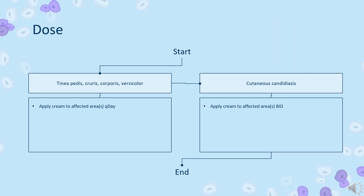Dose — Tinea fungal infections and cutaneous candidiasis: Indicated for topical application in the treatment of tinea pedis, tinea cruris, and tinea corporis caused by Trichophyton rubrum, Trichophyton mentagrophytes, Trichophyton tonsurans, Microsporum canis, Microsporum audouinii, Microsporum gypseum, and Epidermophyton floccosum; also indicated for treatment of cutaneous candidiasis and tinea versicolor.